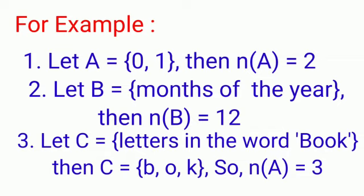Take one more example. Set B equals months of the year. You already know months of the year - 12. So cardinal number of B is equal to 12. It's very easy.